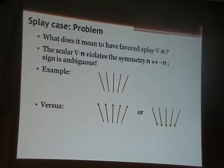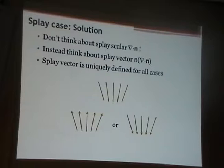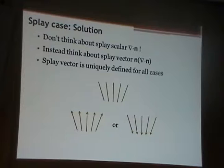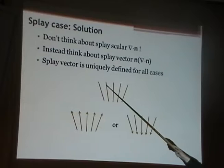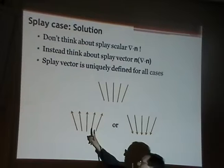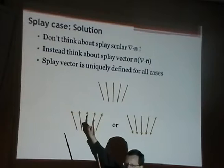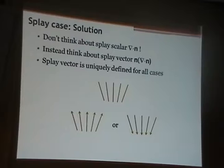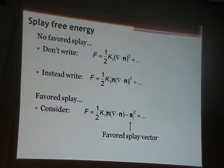The key is we only want to think of things that are even in n. One nice even thing to think about is the splay vector: take the vector n times del·n. This is nice and even. If we draw the arrows this way, it's a positive divergence times a vector pointing up, so the splay vector points up. Alternatively, a negative divergence times a vector pointing down also gives a vector pointing up. So this splay vector is a meaningful quantity, unlike the splay scalar.